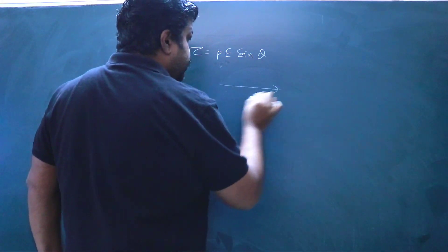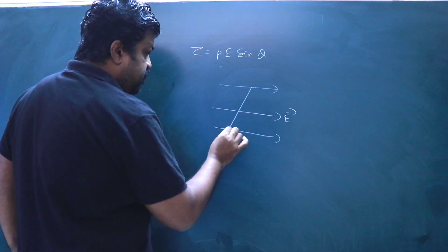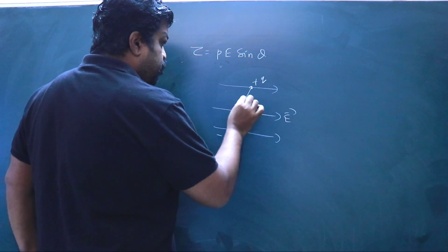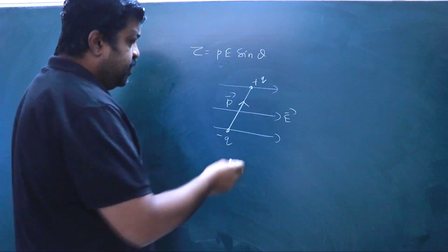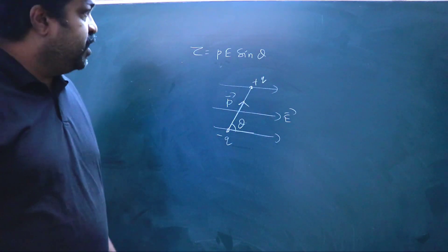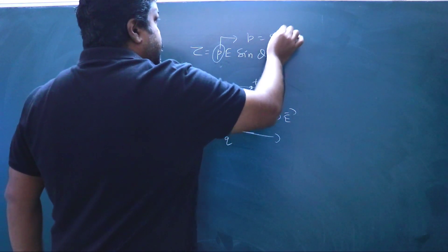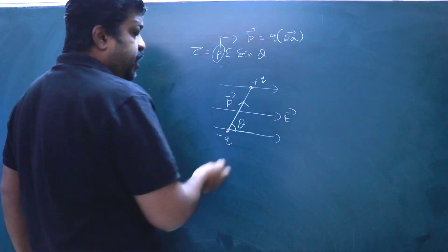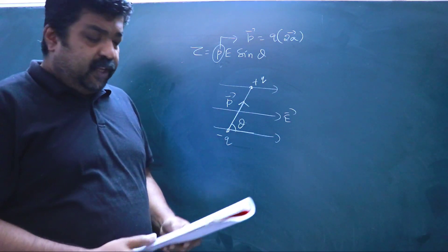The torque on a dipole is given by τ = PE sinθ, where P is the dipole moment, E is the electric field strength, and θ is the angle between the dipole and the electric field. The dipole moment P = Q × 2a, where 2a is the length of the dipole, always measured from the negative charge to the positive charge.